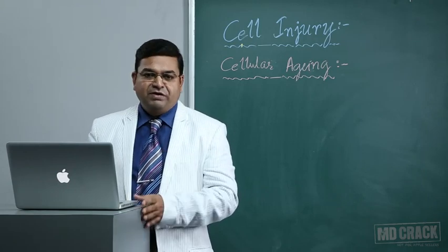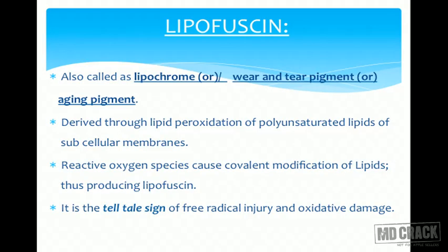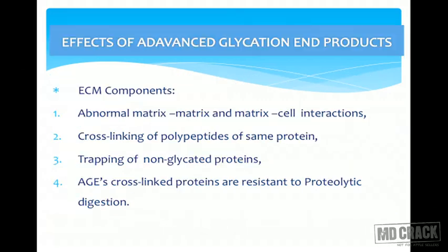Lipofuscin, also called aging pigment, is derived from lipid peroxidation of polyunsaturated lipids of subcellular membranes. It is indicative of reactive oxygen species that cause covalent modification of lipids, thus producing lipofuscin. It is a telltale sign of free radical injury and oxidative damage that cells have been exposed to.